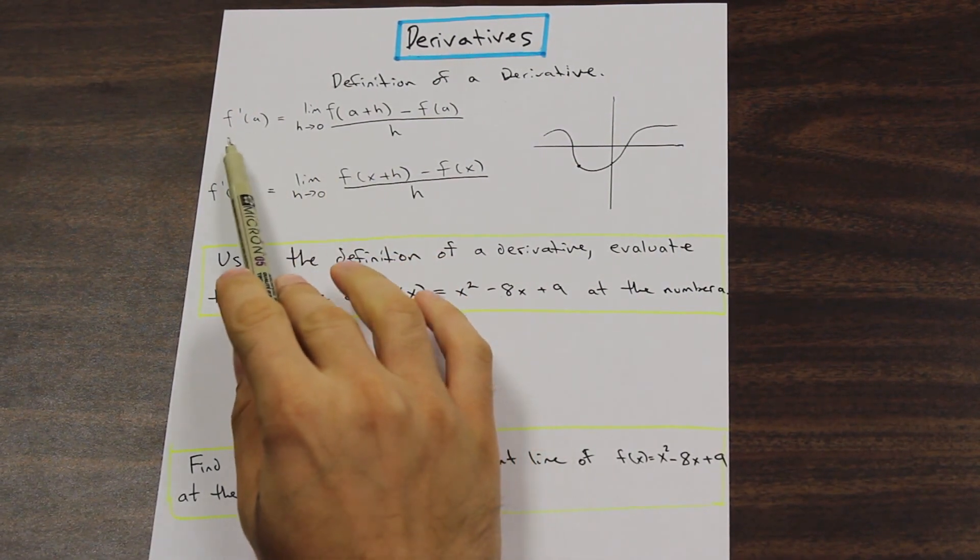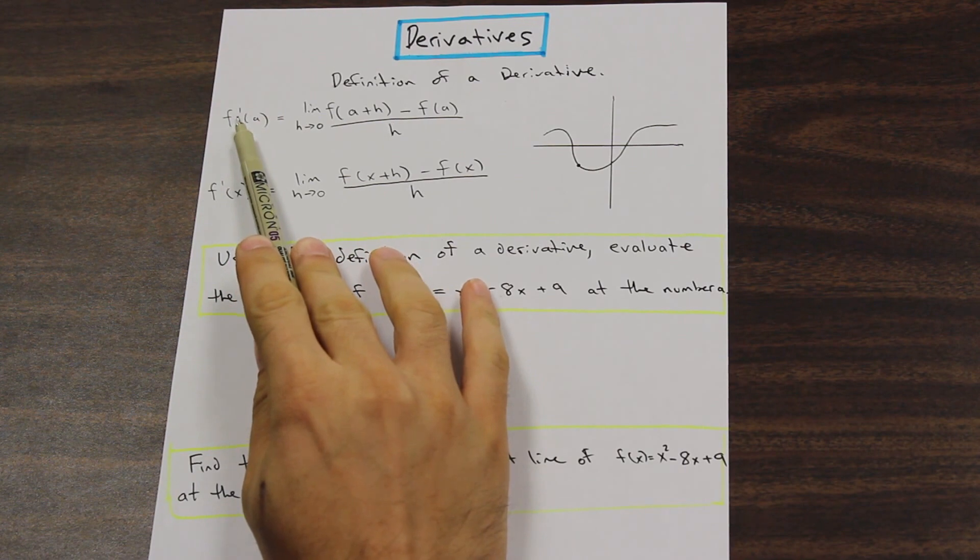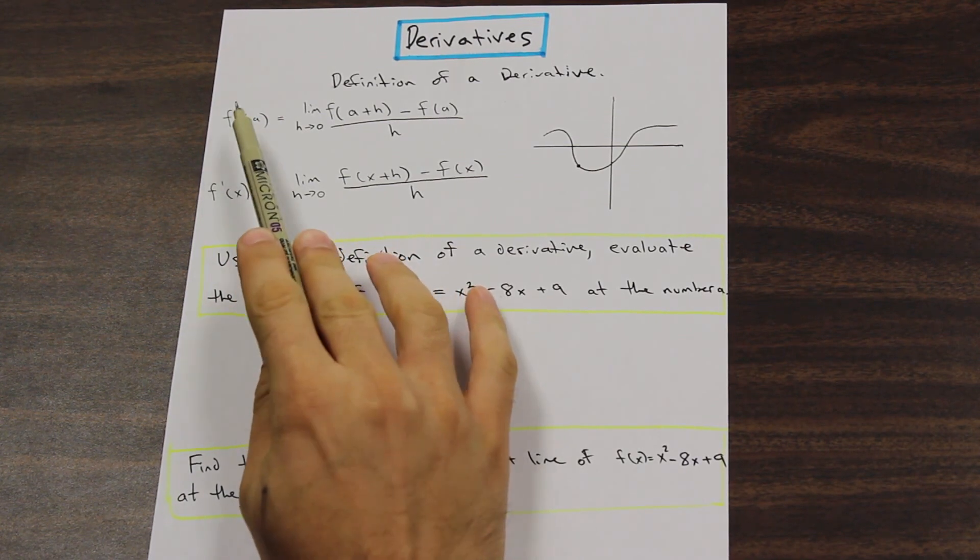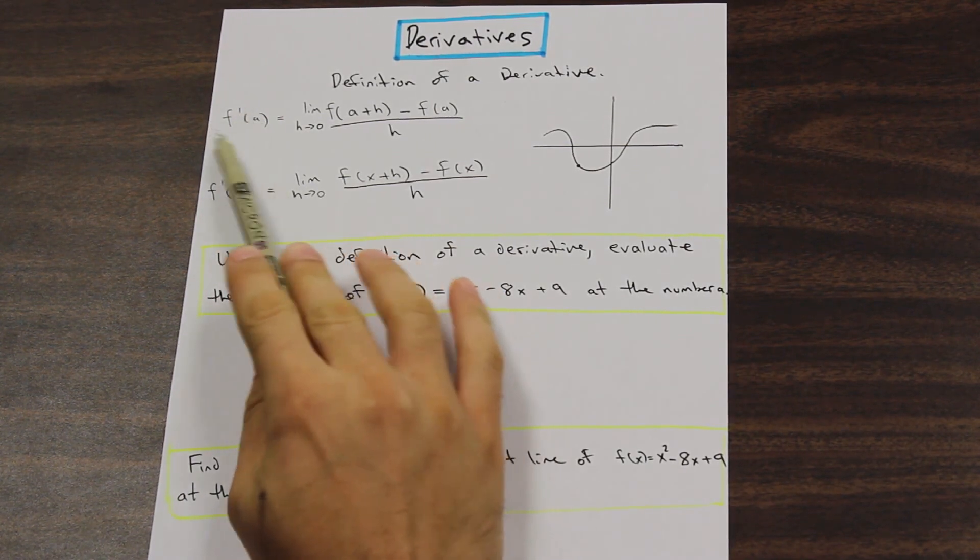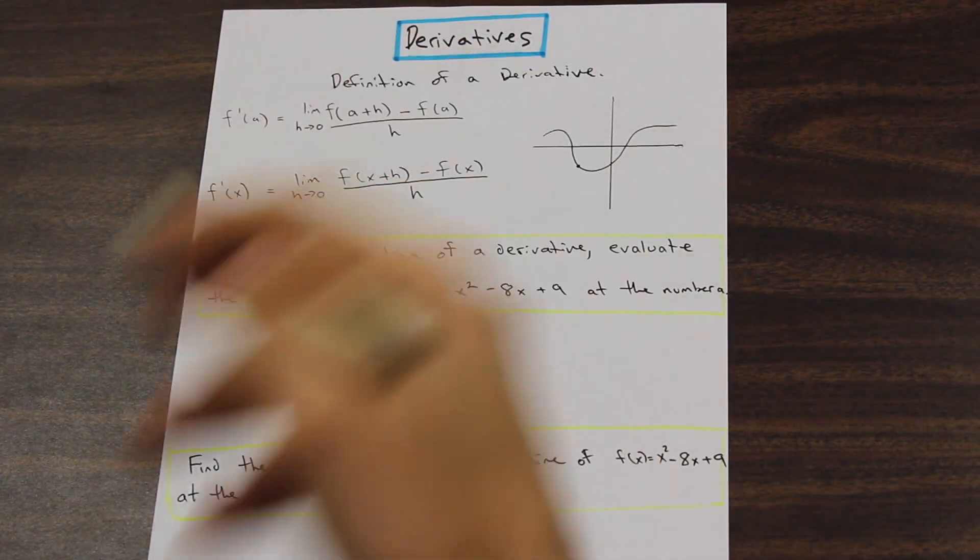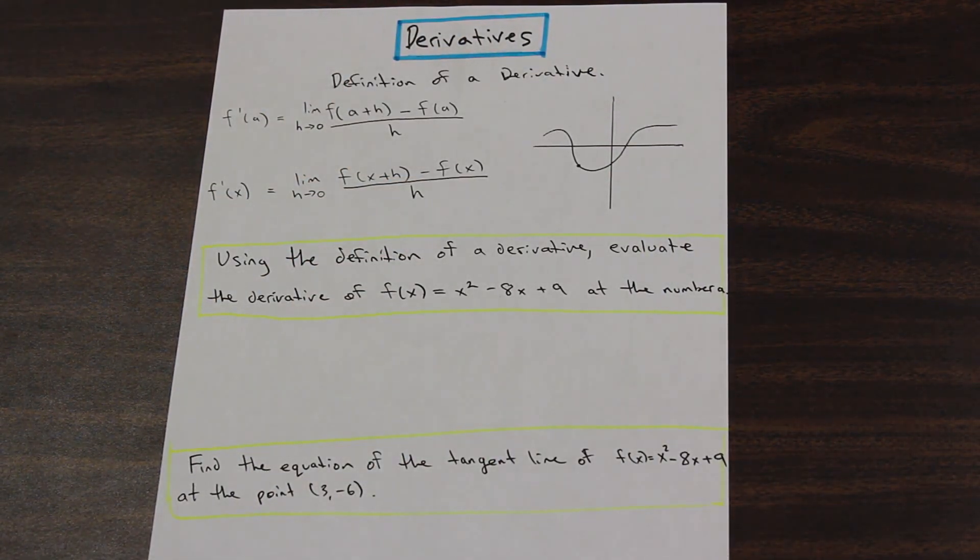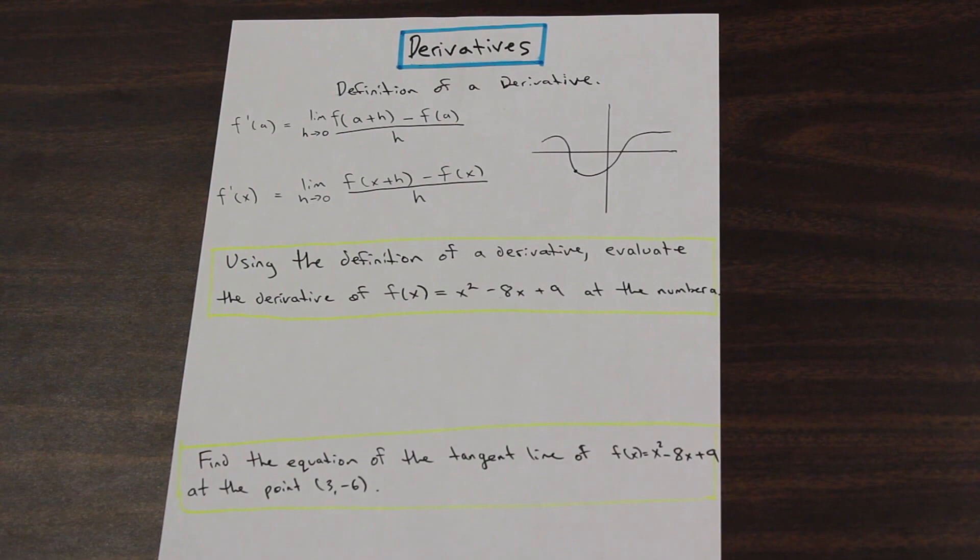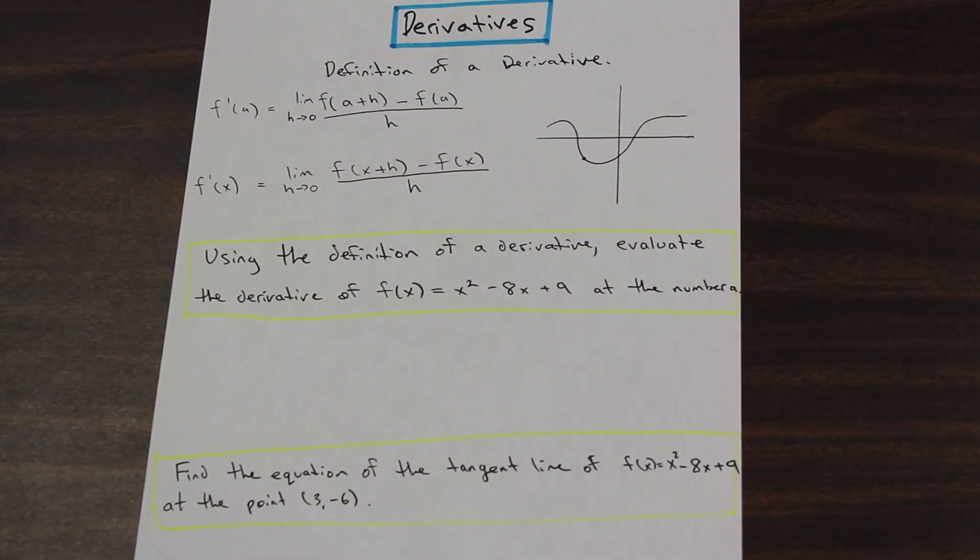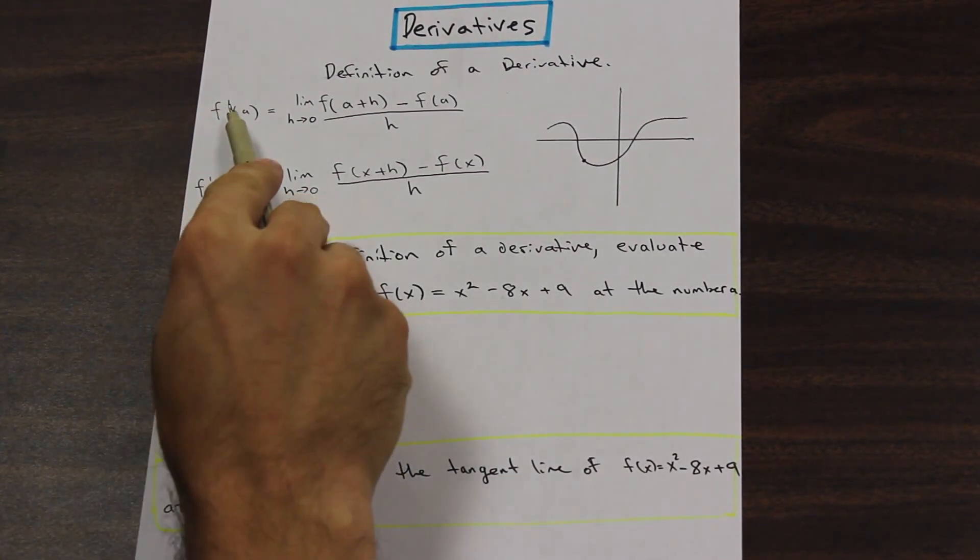And it's f prime a, and see this prime here, that represents that we're taking the derivative. So the derivative of f of a is f prime a, and the second derivative will be f double prime a. That's just a notation, so don't get confused by that.